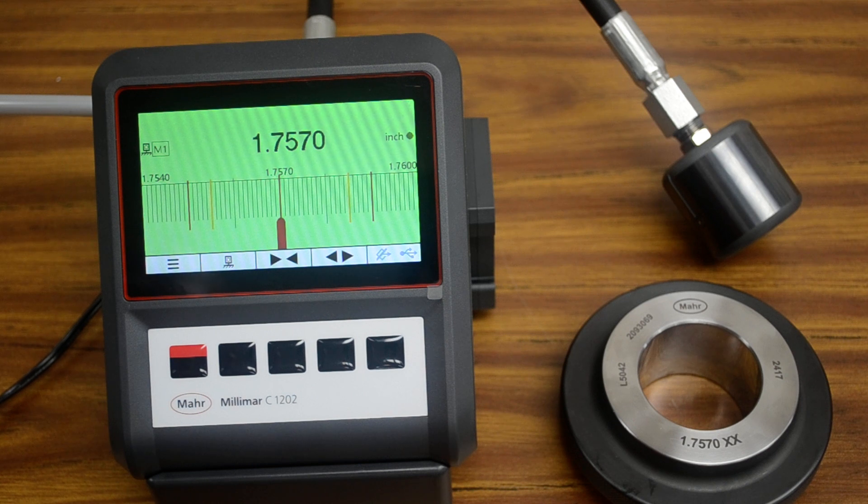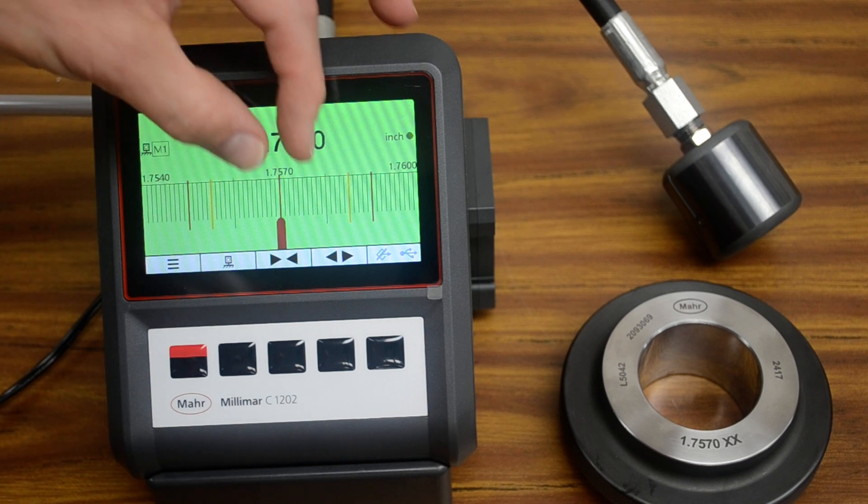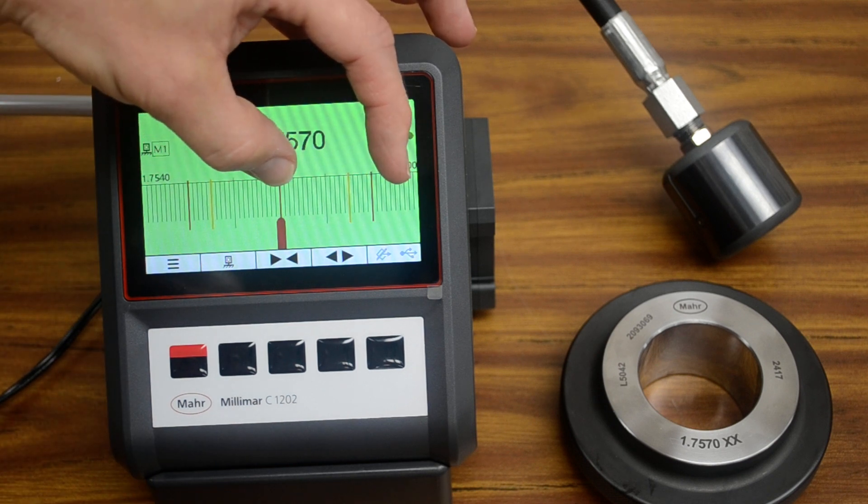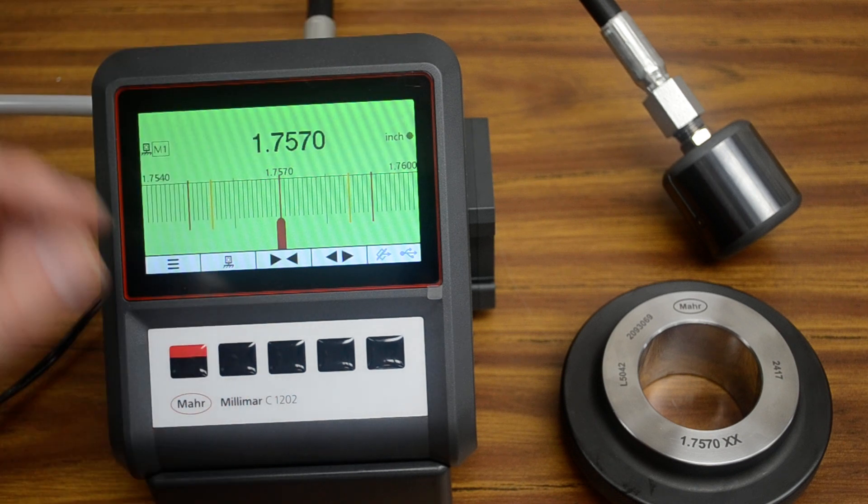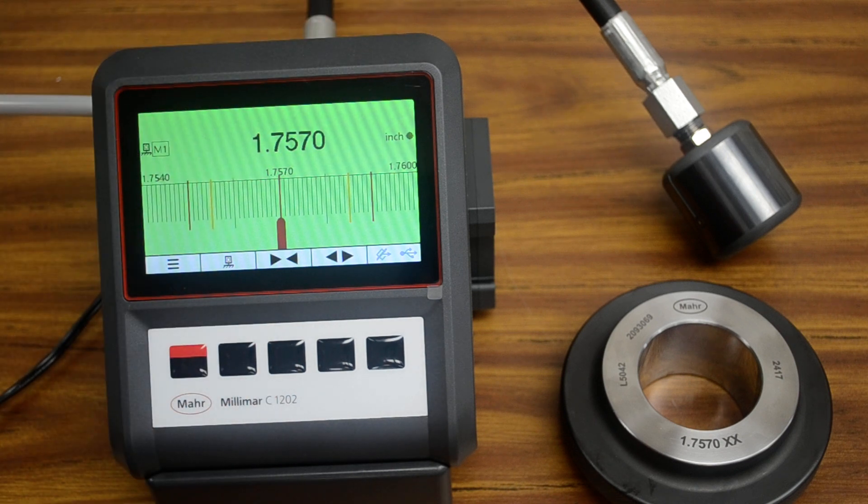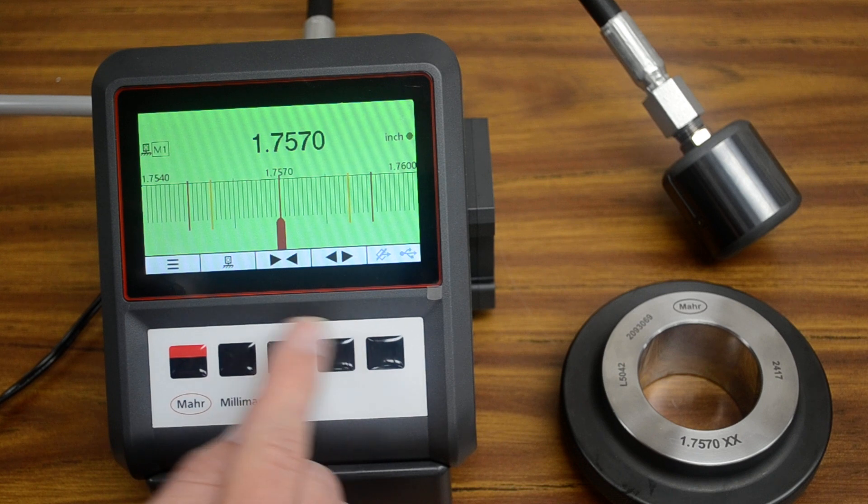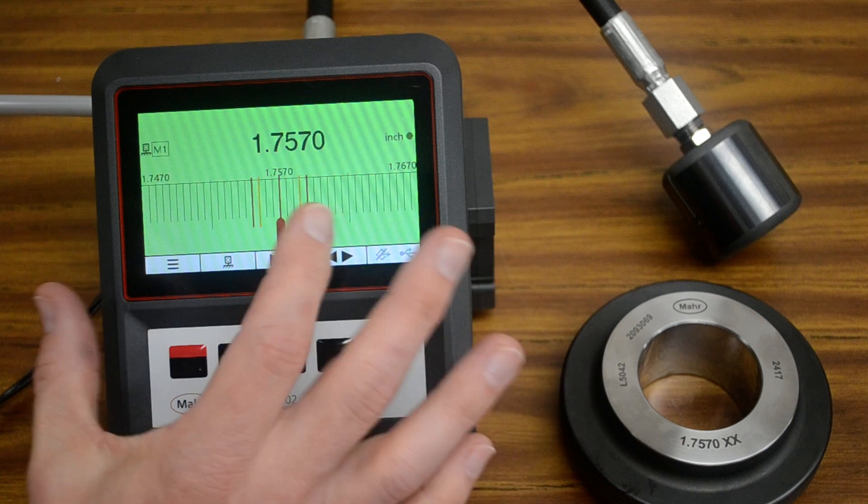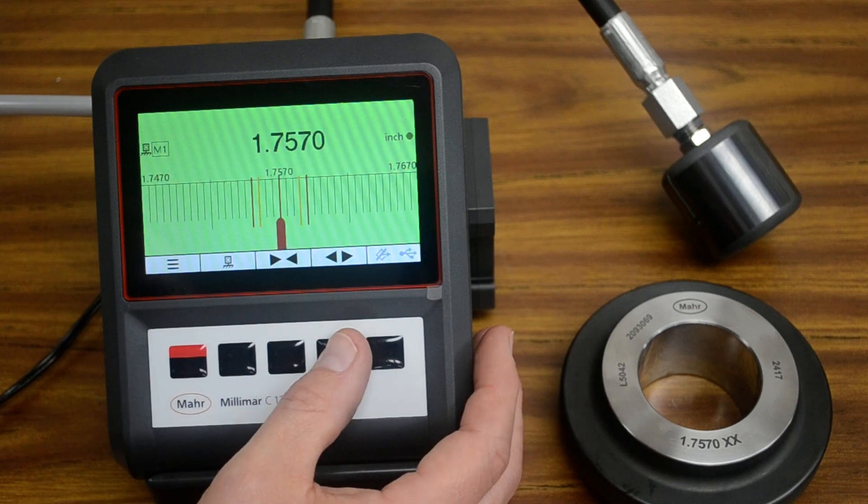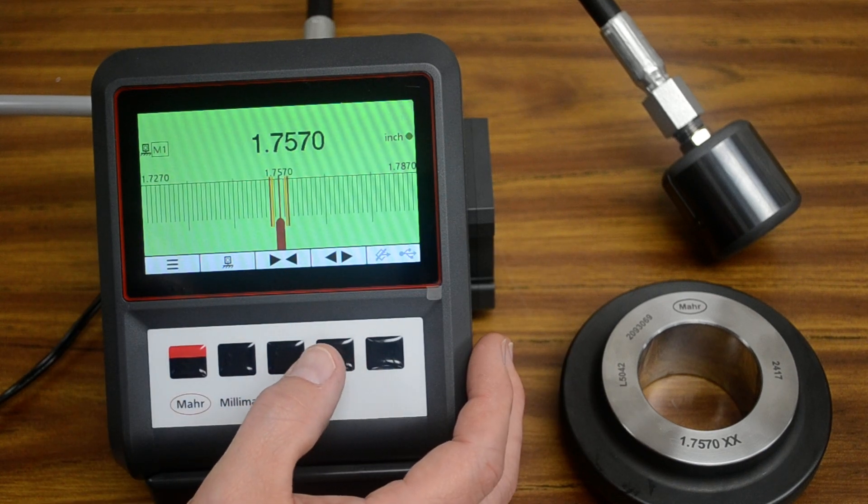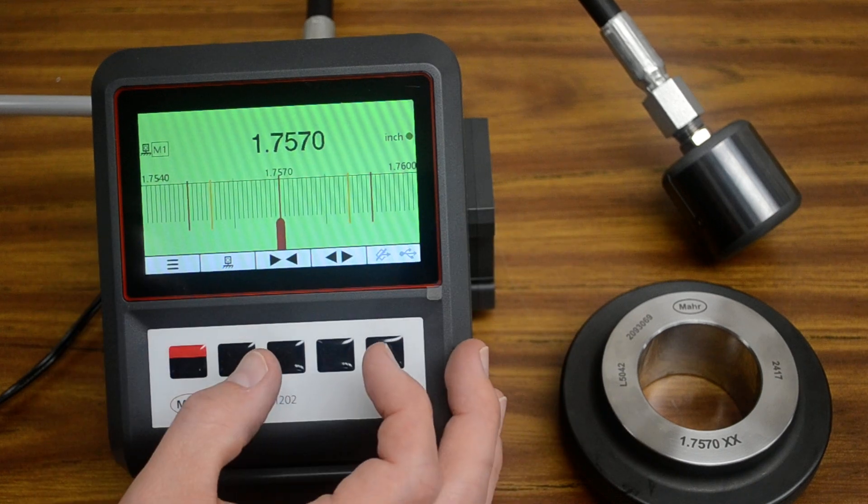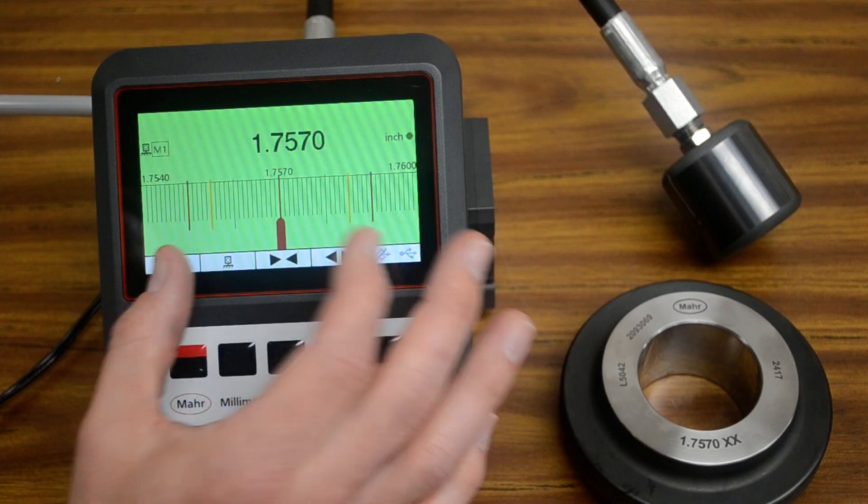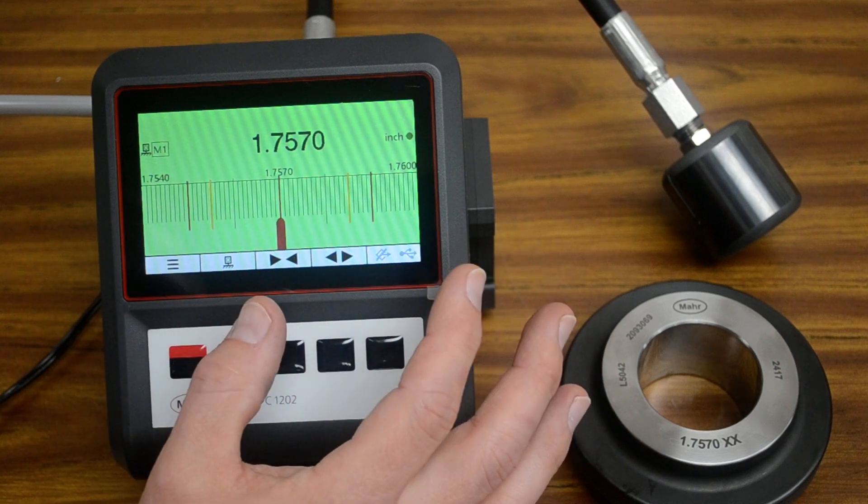A couple other important things to note. This is a number line, and so we can set the scale of that depending on our tolerance range. If you have a plus or minus 1,000th tolerance or a plus or minus 5,000th tolerance, you may want to scale that differently, and that's what these two do. To add more value to the total that you see, or to zoom in more. And you want to get it a nice place where the bar is moving across most of the screen.